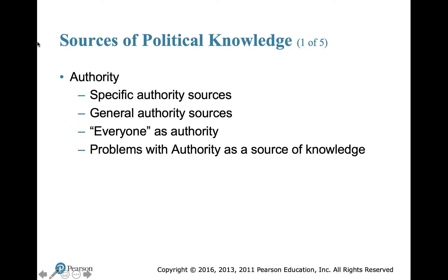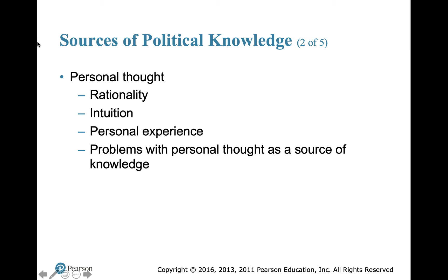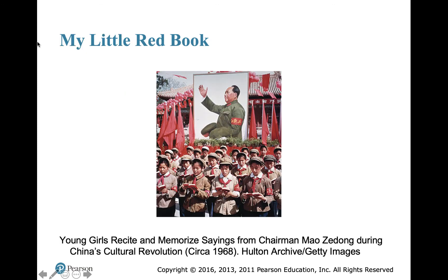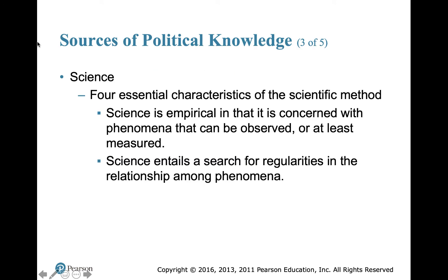Sources of political knowledge include authority sources — your parents, your church, your environment. Problems with authority as a source can arise because you can get a convoluted view of the world by looking through only one lens. There's also rationality through personal thought, intuition, and perception. Personal experience — being in the military, law enforcement, a teacher, or a student — also shapes knowledge. Problems with personal thought can occur when our values or belief systems distort how we view politics.